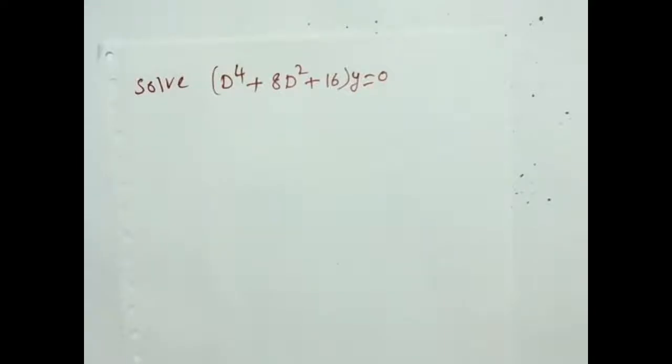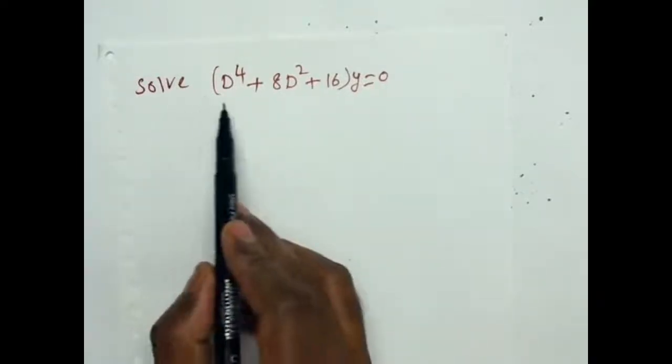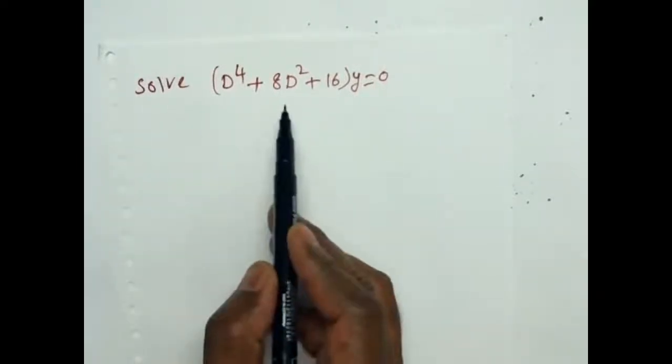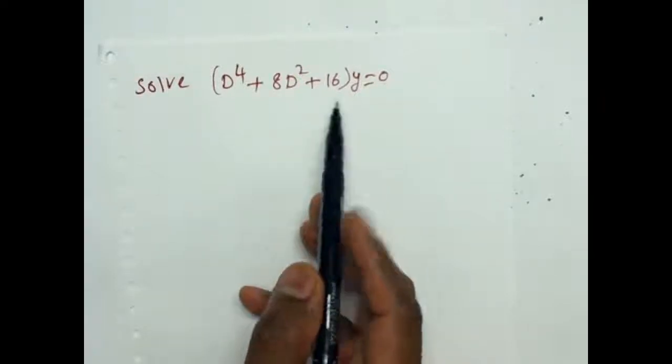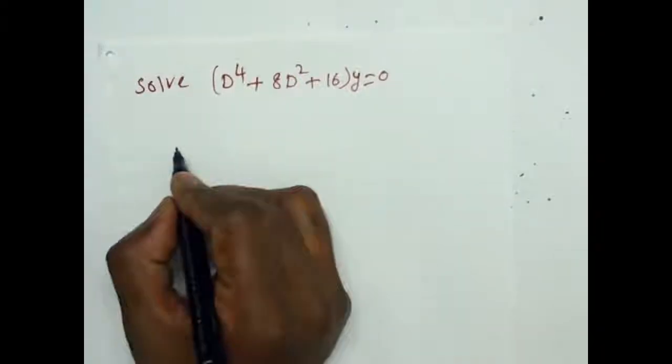Hi friends, welcome to Raman's solve. Solve: (D⁴ + 8D² + 16)y = 0.